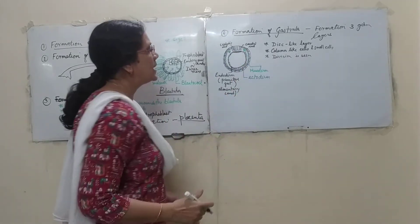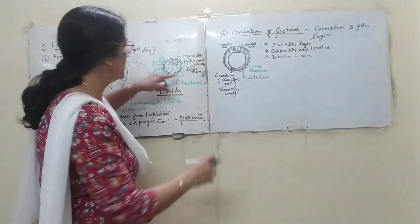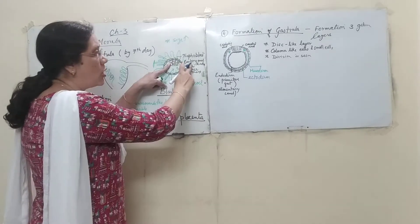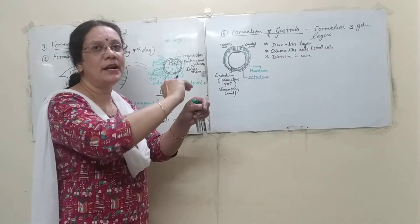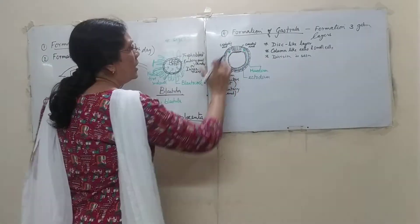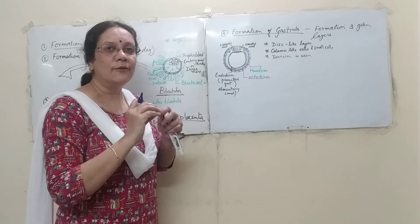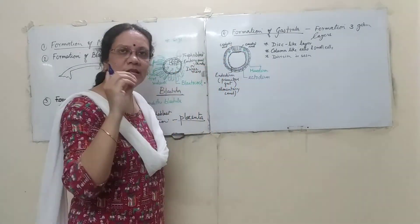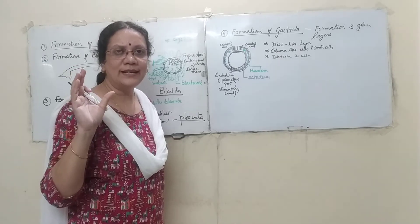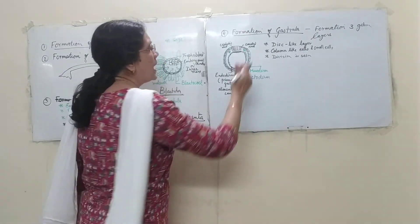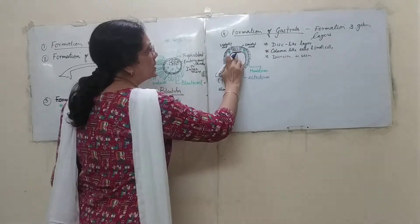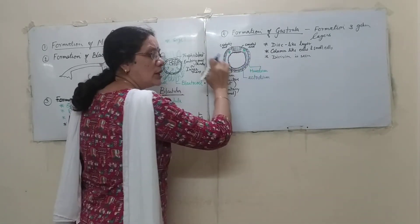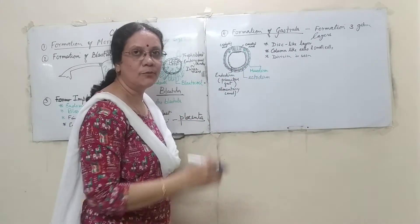To summarize: the trophoblast is on the outside. Below the trophoblast, the embryonal knot cells got compressed and formed a disc-like structure. In the first division, one group of cells were tall and column-like, while the other group were small cells that gradually degenerated. The second division of columnar cells caused a group of cells to separate out, and these divided again to form a ring-like structure known as the ectoderm, close to the trophoblast.